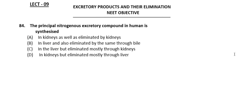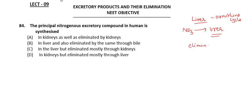Question 84: The principal nitrogenous excretory compound in humans is urea, synthesized where? We know ammonia is converted to urea through the ornithine cycle. Urea is produced in the liver. The option 'synthesized in kidneys' is incorrect — it is eliminated by kidneys but not synthesized there.